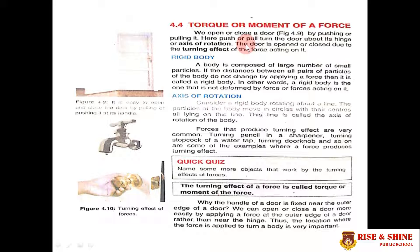As we discussed earlier, when a force is applied on bodies, the bodies move. But when a force is applied on a rigid body and the body rotates about its axis, then this force produces a turning effect. A rigid body is a body composed of a large number of small particles where the distance between all pairs of particles does not change when a force is applied.